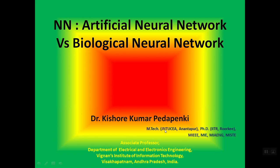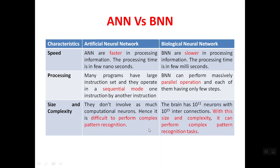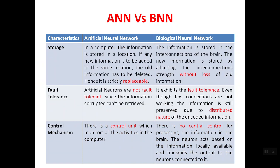In this lecture we are going to study the differences between artificial neural network and biological neural network. Biological neural network is the neural network built in our body, while artificial neural networks consist of artificially generated neurons. The differences between these two are based on six characteristics: speed, processing, size and complexity, storage, fault tolerance, and control mechanism.